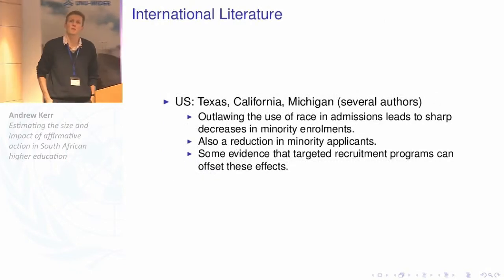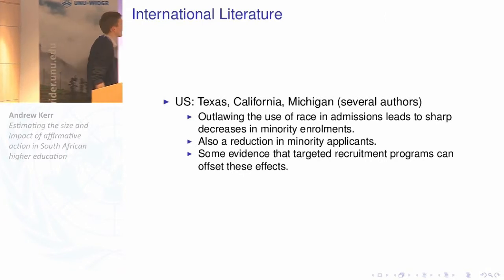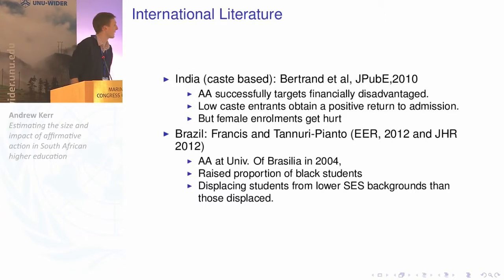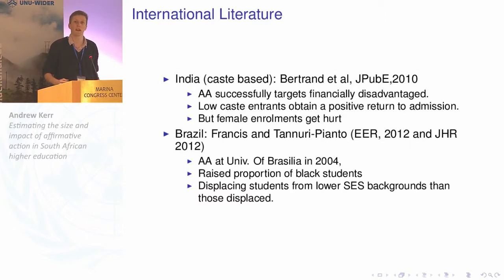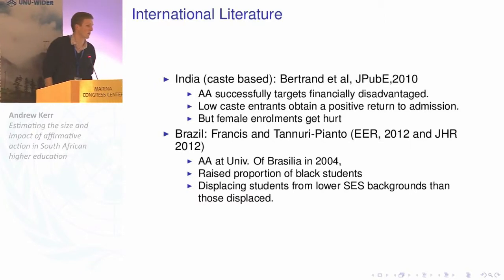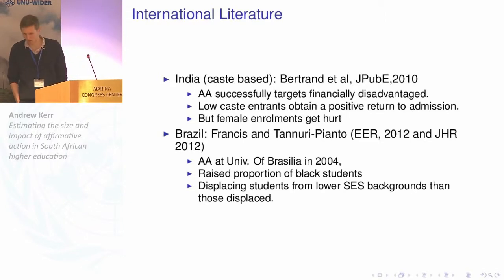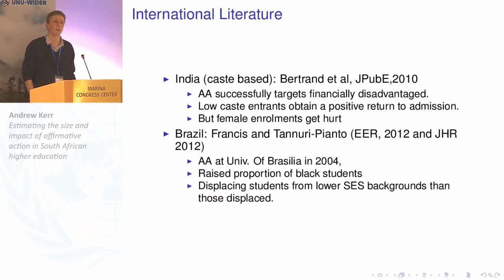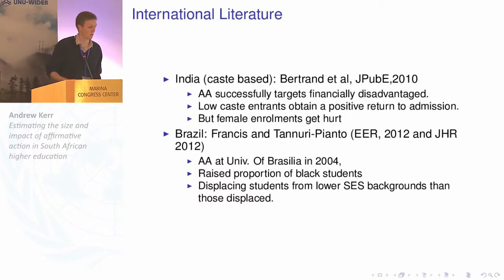Outside the US, there's some recent work on both Brazil and India. In India, there's a caste-based affirmative action. A paper by Bertrand et al. in the Journal of Public Economics finds that affirmative action is successfully targeting the financially disadvantaged rather than high-income members of disadvantaged groups, and that low-caste entrants obtain a positive return to admission, although enrollment of women is much reduced. From Brazil, the University of Brasilia introduced a roughly 20% quota for people who self-identify as black, which raised the proportion of black students, with displacing students from quite lower socioeconomic status backgrounds than those displaced.